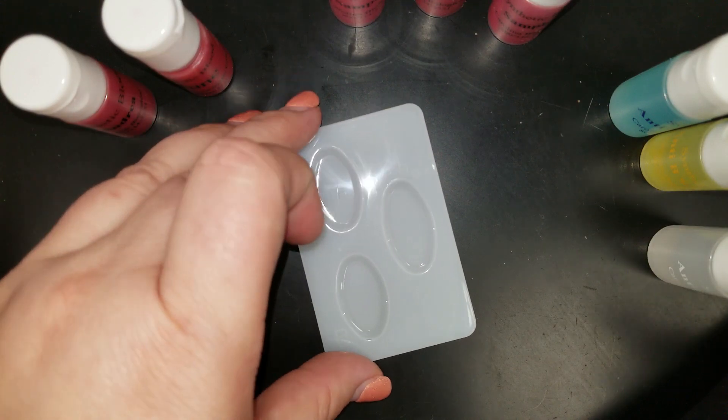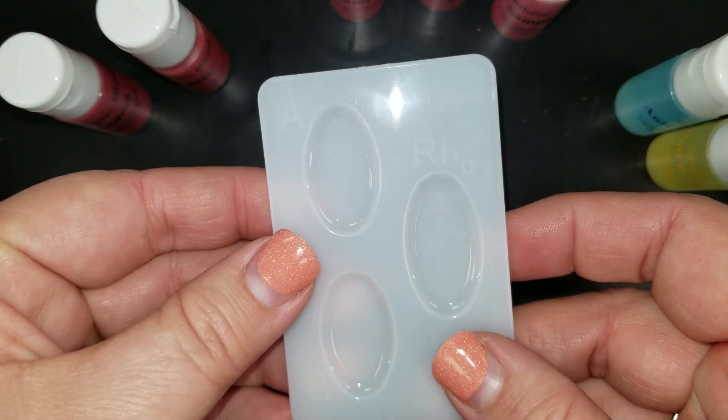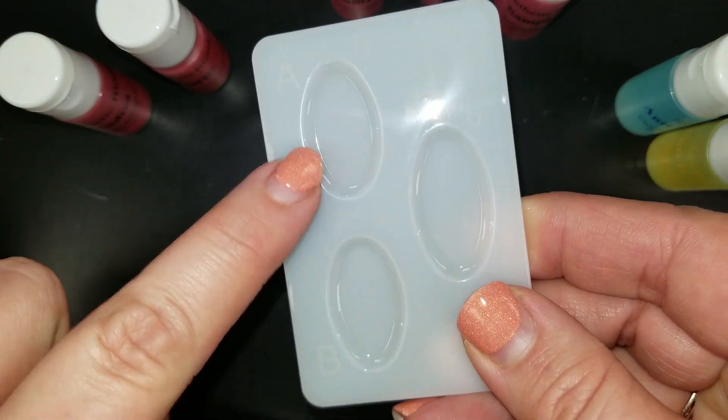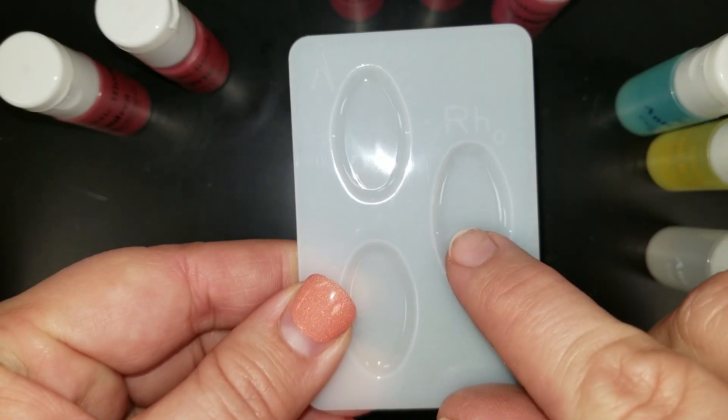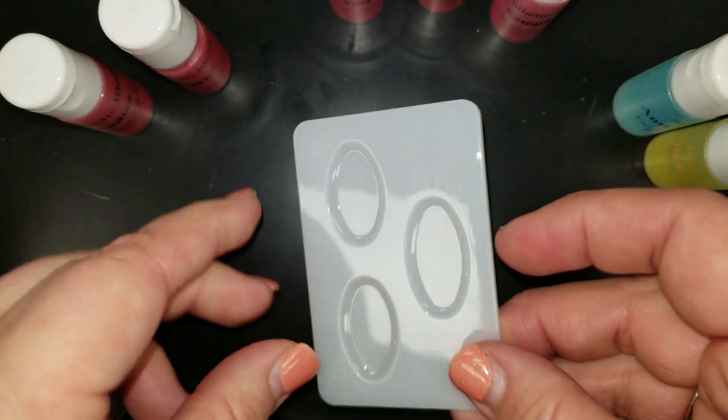Then you have your testing tray here. And it's labeled for you where you're going to do your anti-A test, your anti-B test, and your RH test. So each of these trays are labeled for you.